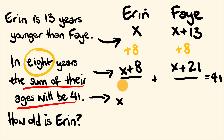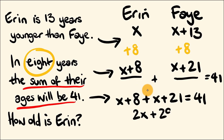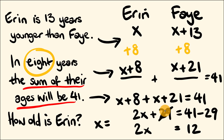So we write: x plus 8 plus x plus 21 equals 41. Now let's solve. Consolidating: x plus x is 2x, and 8 plus 21 is 29, so 2x plus 29 equals 41. Subtracting 29 from both sides gives 2x equals 12. Therefore x equals 6. Aaron is 6 years old.